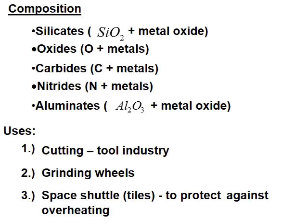The composition of ceramics includes silicates — silicon oxide and other metal oxides. It could be carbides, nitrides, just oxides, or aluminates — aluminum oxide and other metal oxides mixed together. The uses of ceramics include the tool industry for cutting and grinding, and in the space shuttle they are used to protect against overheating.